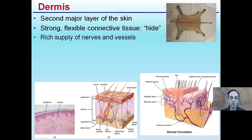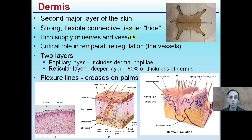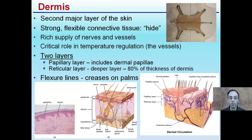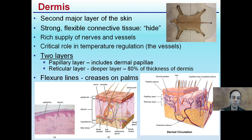The dermal layer is the second major layer — strong, flexible tissue often referred to as the hide. It has a rich supply of nerves and vessels, and plays a critical role in temperature regulation. It has two layers: the papillary layer, which involves the dermal papillae, and the reticular layer, which is deeper and composes about 80% of the thickness of the dermis. Flexure lines are creases in the palms — these ridges come from the dermal layer.